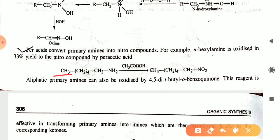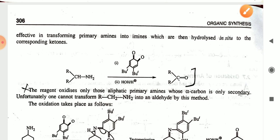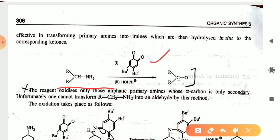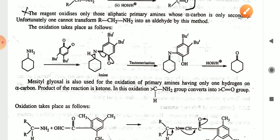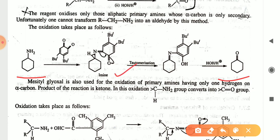As shown, amine in the presence of peracid converts to the nitro compound. Aliphatic primary amines can also be oxidized by 4,5-di-tert-butyl-ortho-benzoquinone. This reagent effectively transforms the primary amine into imines, which are hydrolyzed to the corresponding ketones. You can see that in the presence of the tert-butyl reagent, the amine gives the hydrolyzed ketone product.